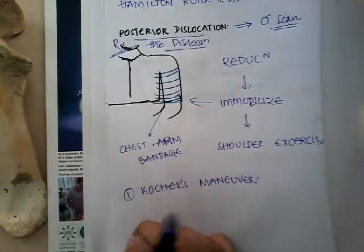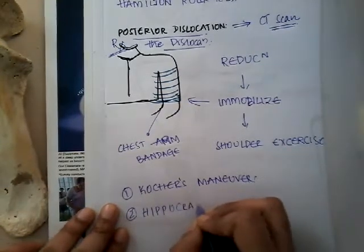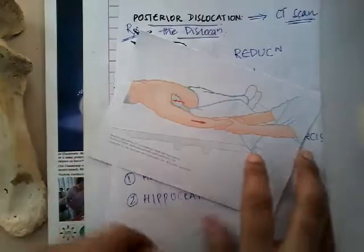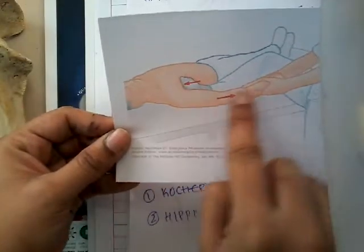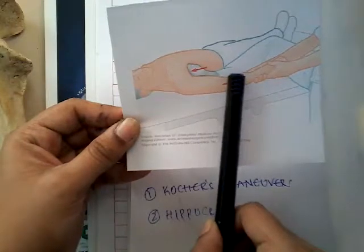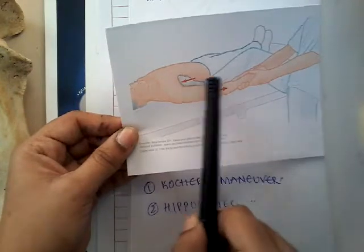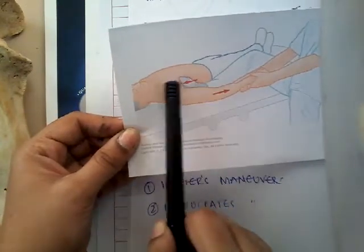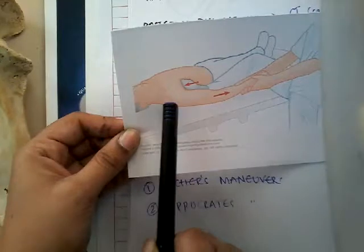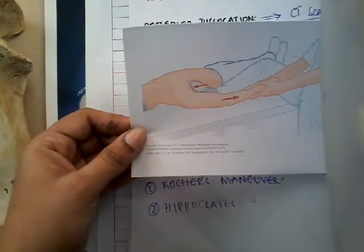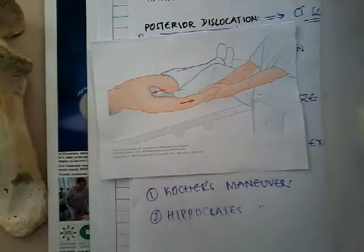The second manoeuvre is Hippocrates' manoeuvre. Here, the surgeon pulls the patient's arm while applying counter-traction by placing his foot in the axilla of the patient. Because of this traction and counter-traction, the head of the humerus comes back to its position. This is Hippocrates' manoeuvre, though it is not mainly followed now.